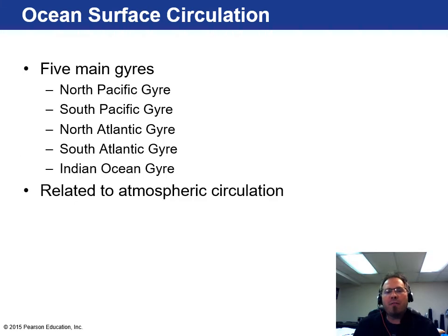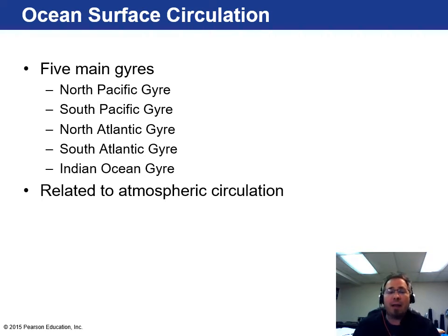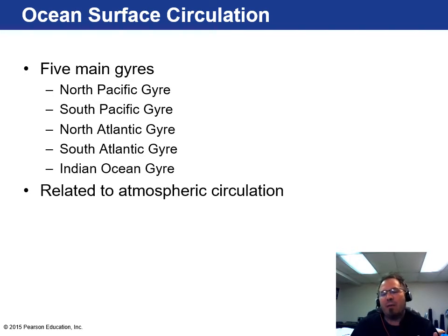There are five main gyres found throughout the world: the North Pacific and South Pacific gyres, the North Atlantic and South Atlantic, and the Indian Ocean gyre. These are all related to atmospheric circulation — the prevailing winds blow ocean water in a specific direction, carrying either warm or cold water depending on the direction of origin.